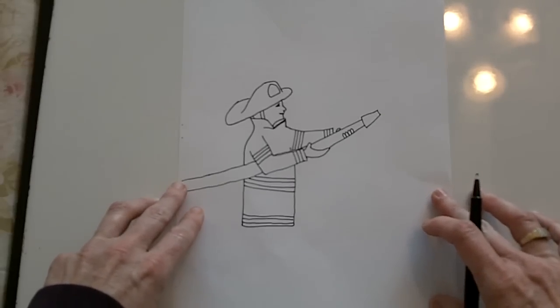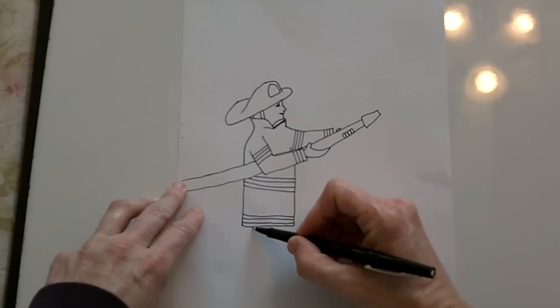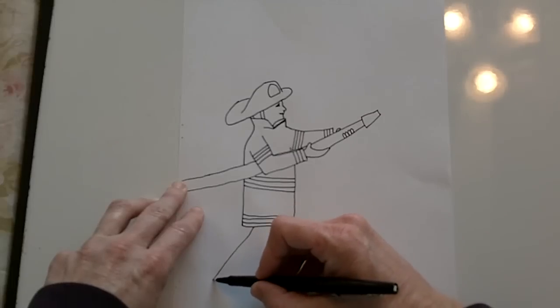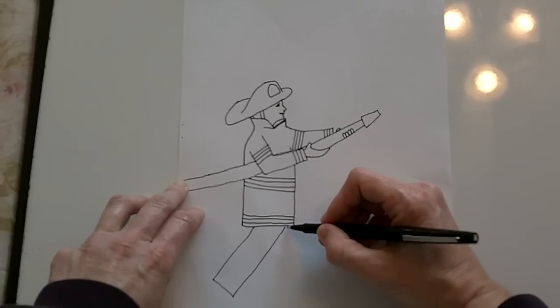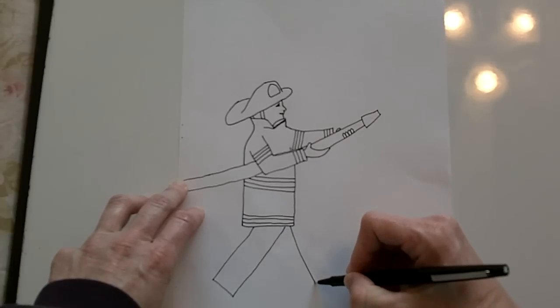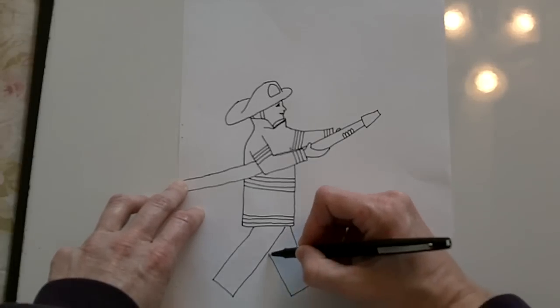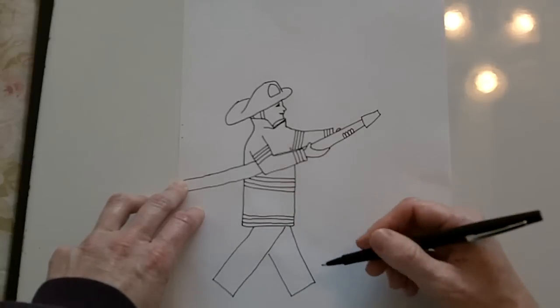For his legs, they're just simple rectangle shapes. One goes out this way and up. And the other one comes out this way. And you want to make sure that they're pretty much the same length.